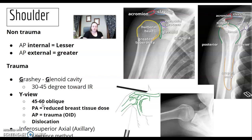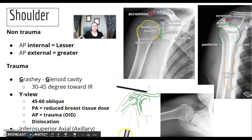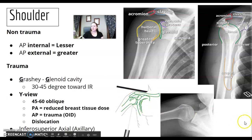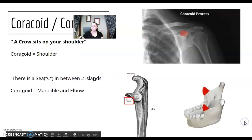Why do we do a Y view? We're looking for dislocation — anterior or posterior. The inferior-superior, or axillary method, is where the beam comes from the inferior exiting the superior. That's the Lawrence method, used for looking at the axillary shoulder.